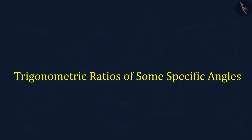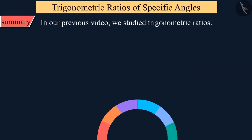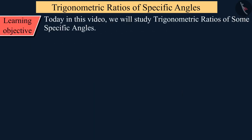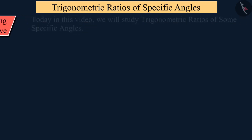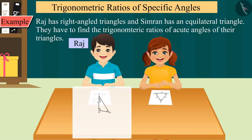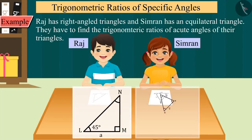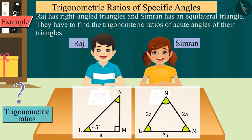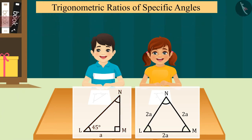Welcome to this video. In our previous video we studied trigonometric ratios. Today in this video we will study trigonometric ratios of some specific angles. Raj has a right-angled triangle and Simran has an equilateral triangle, whose acute angles they have to find the trigonometric ratios of. Let us see how Raj and Simran will find them.